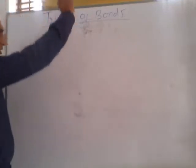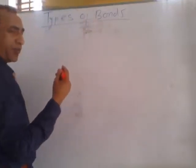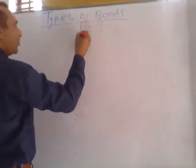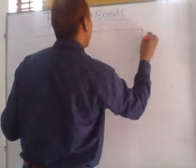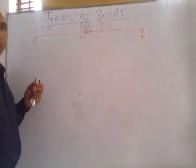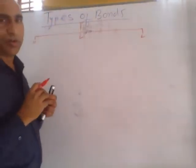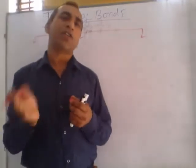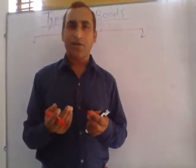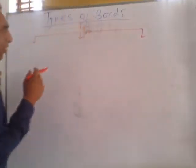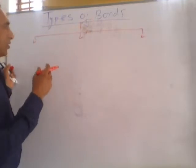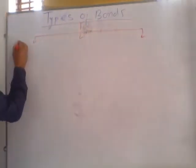In different compounds and different molecules, the nature of bond is classified in three different categories, on the basis of transfer or sharing of electrons. On this basis of mode of sharing of electrons, bonds are of three types.